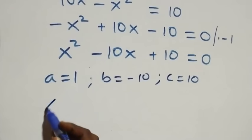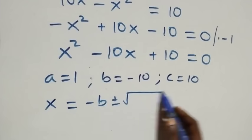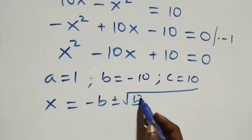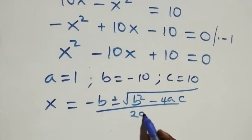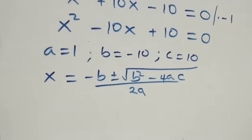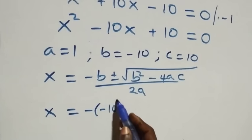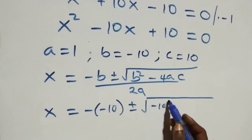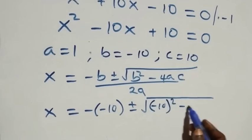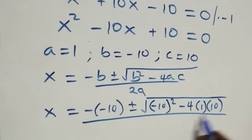The quadratic formula is x equals minus b plus or minus square root of b squared minus 4ac, over 2a. Substituting, this becomes x equals minus (minus 10) plus or minus square root of 10 squared minus 4 times 1 times 10, over 2 times 1.